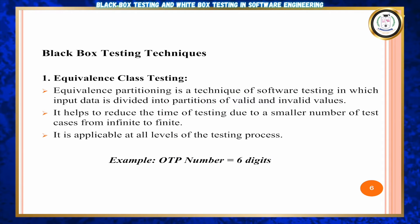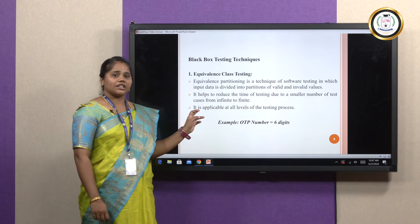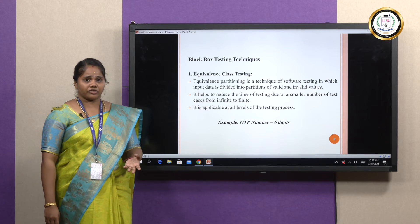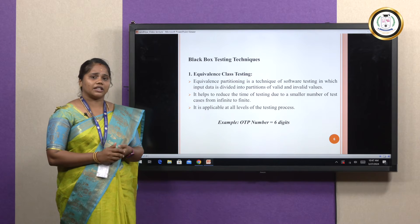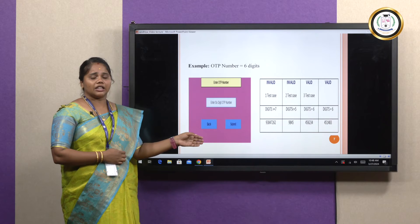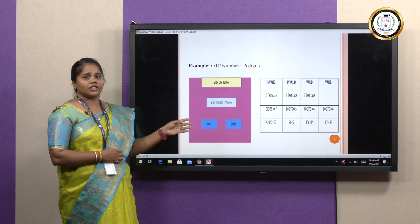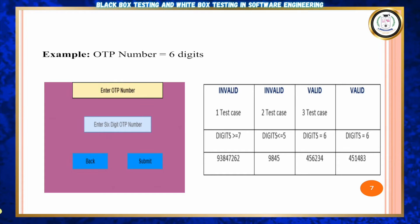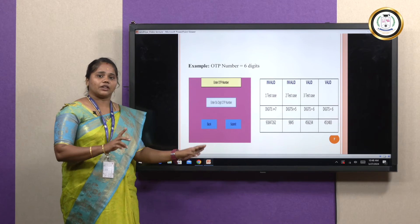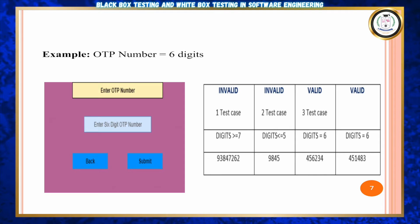Next, black box testing techniques. There are three types. First, equivalence class testing, which partitions the input into valid and invalid data to reduce testing time. For example, for an OTP number fixed at six digits: a digit count greater than or equal to seven is invalid, less than or equal to five is invalid, and exactly six digits is valid. That is equivalence class testing.